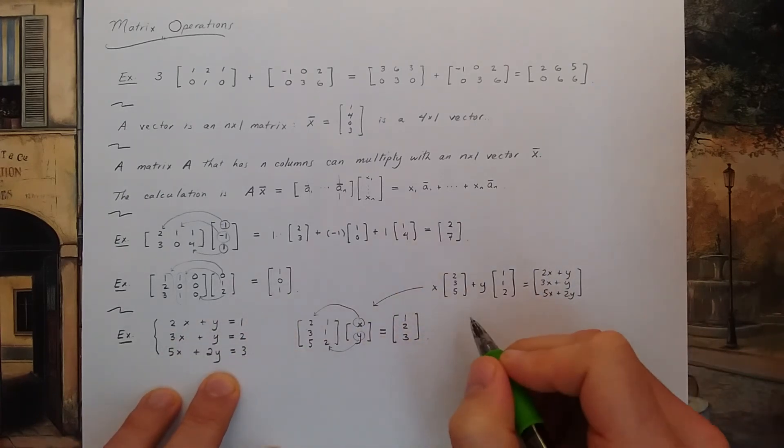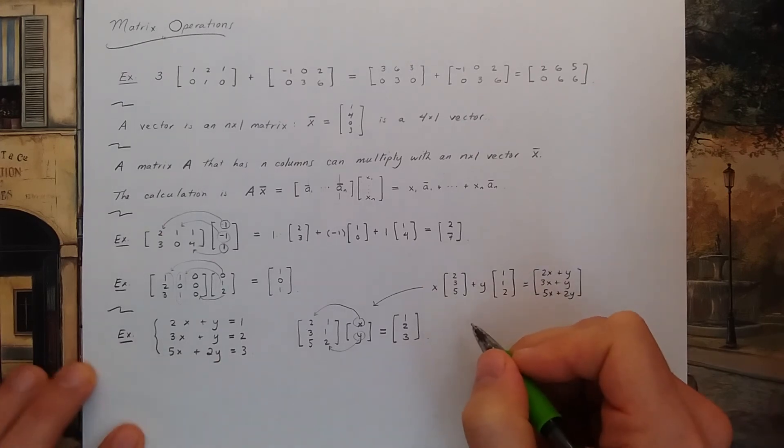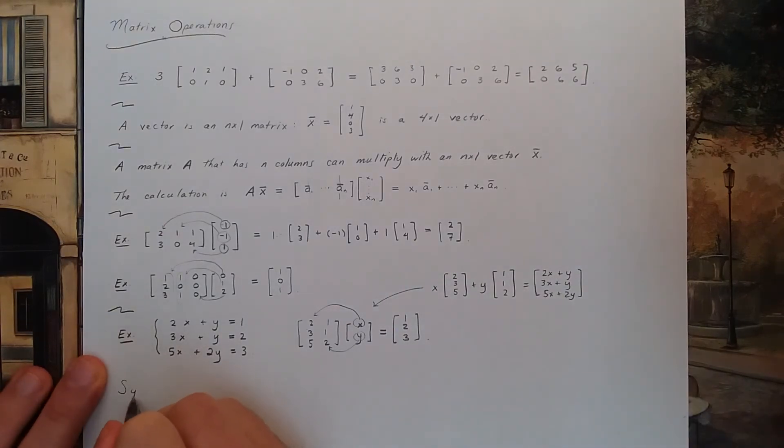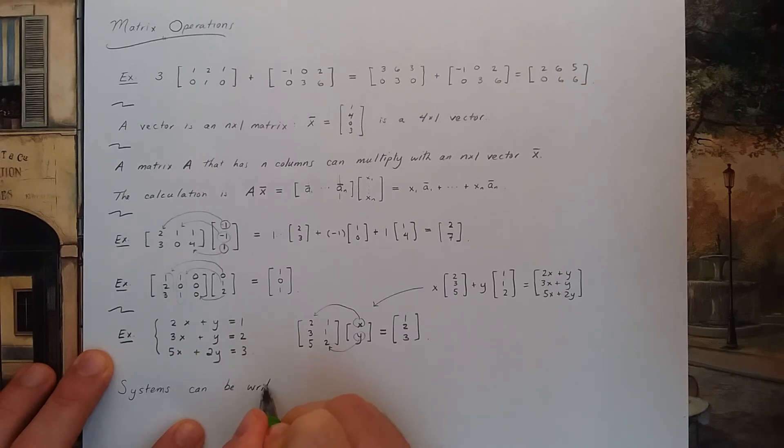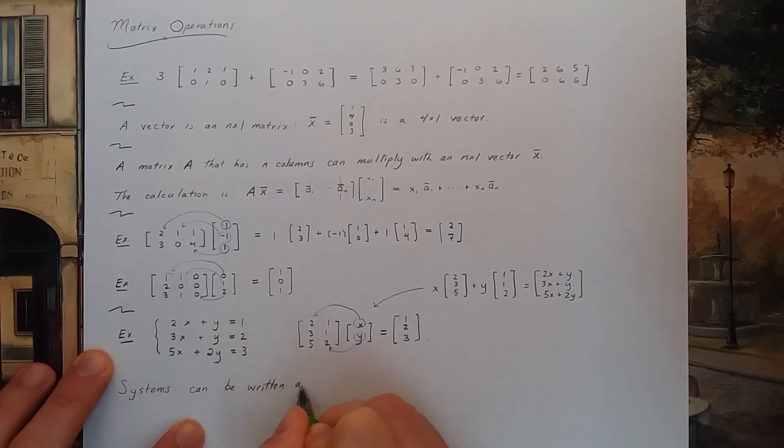So systems that we've been discussing, linear systems of this form, systems can be written as a matrix multiplication.